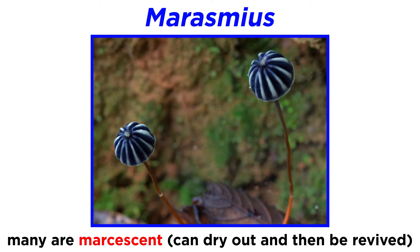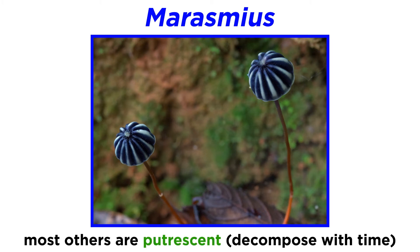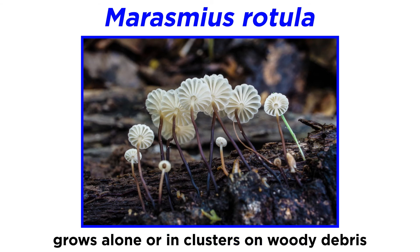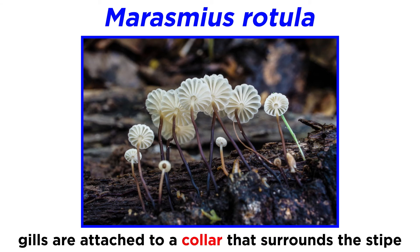Many Marasmius species are termed marcescent, meaning they can dry out and later be revived after rain. Most other mushrooms are termed putrescent, meaning they decompose with time. The type species of Marasmius is Marasmius rotula, commonly called the pinwheel mushroom. Marasmius rotula grows alone or in clusters on woody debris, and notably has gills attached to a collar that surrounds the blackish-brown stipe.